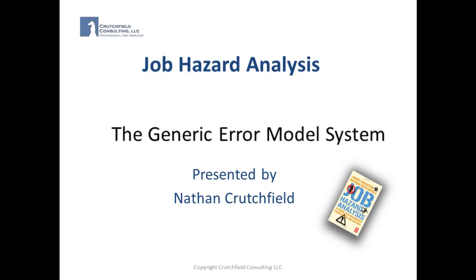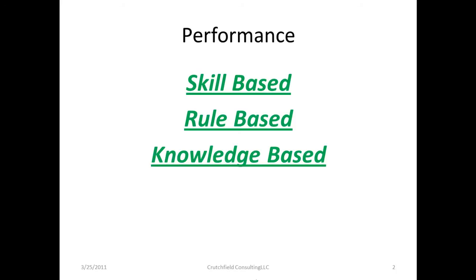We came across the generic error model system in the U.S. Department of Energy's Standard on Human Performance Improvement Handbook published in June 2009. On review of the generic error model system concept as presented in the handbook, we believe that identification of the type of performance should be incorporated to the fundamentals of the job hazard analysis process.